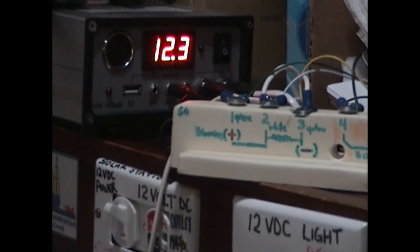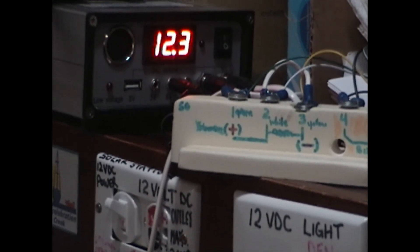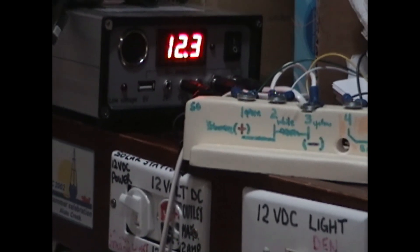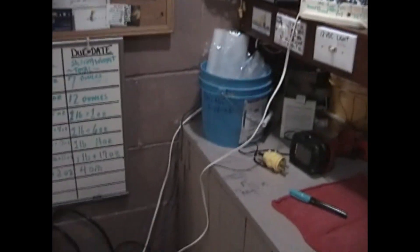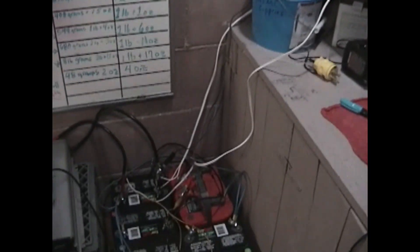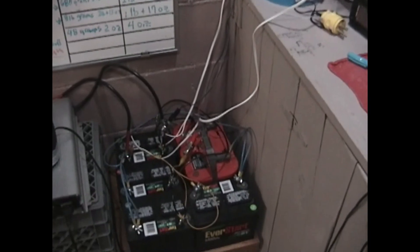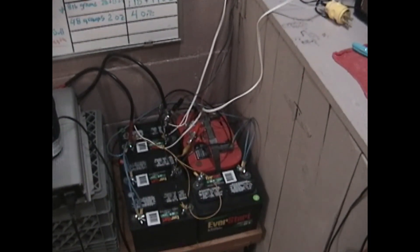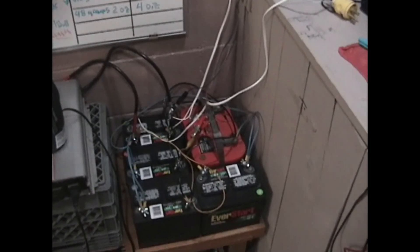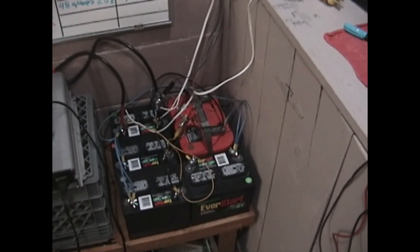We have our charge controller there, it's showing 12.3 volts DC. And we have a small battery bank as well to store the energy. We don't need too large of a battery bank here for this particular workstation. And we have an inverter so that we can make AC power.